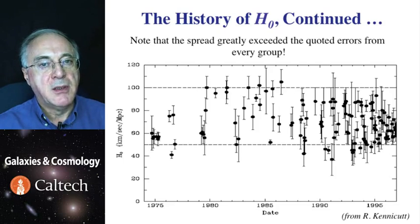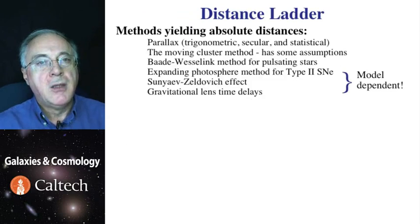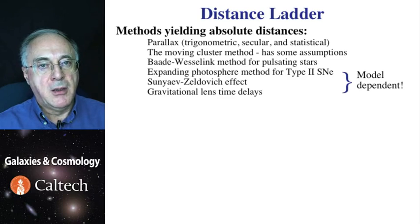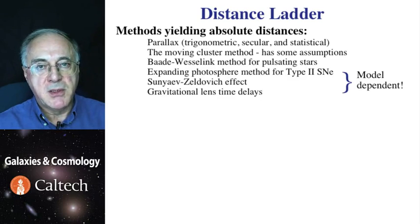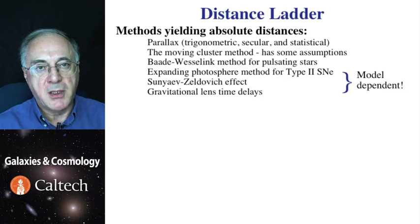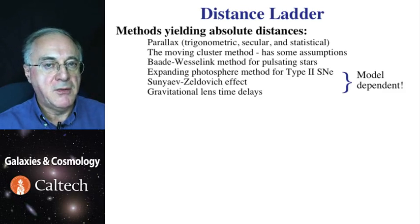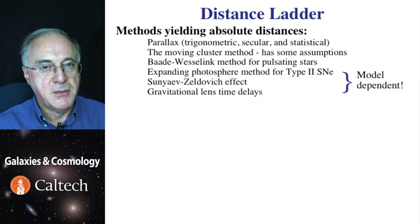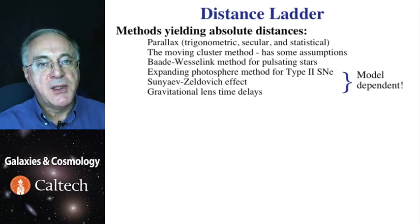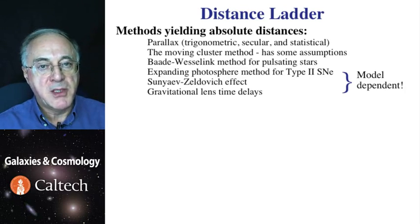There are two kinds of methods to measure distances. There are methods that ostensibly give absolute distances to particular kinds of objects, like trigonometric parallax for stars, or using physical models to derive distances to supernovae or clusters of galaxies. Parallax is the only safe one — the geometry is well understood and there are no problems.